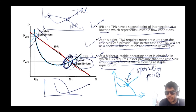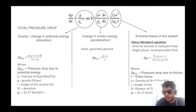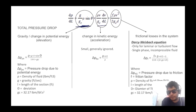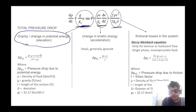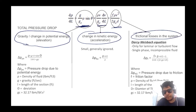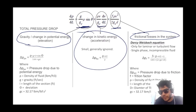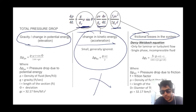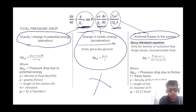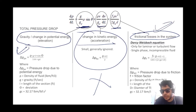Now, what does the tubing performance relationship consist of? There are three major components: first, gravity or change in potential energy; second, change in kinetic energy; and third, frictional loss. The kinetic energy or acceleration term has a very small value and can be ignored when discussing the total pressure drop in the tubing. The most important terms are elevation and frictional loss.